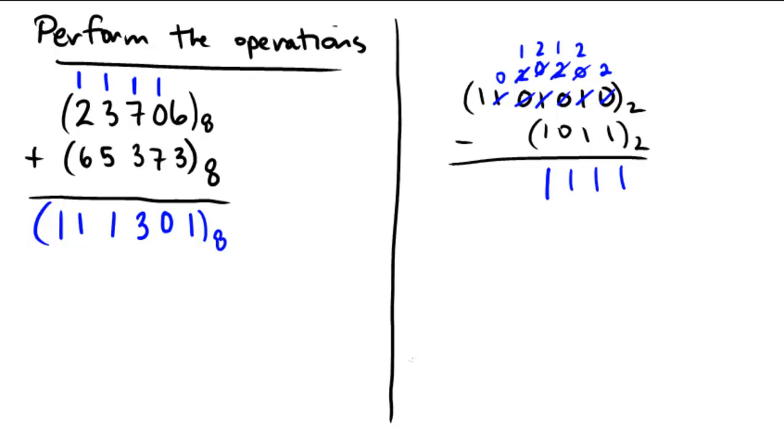So 2 minus 1 is 1. 1 minus 0 is 1. 0 minus 0 is 0. And 1 minus 0 is 1. So it looks like we get 101, 11, 11 in a base 2 system.